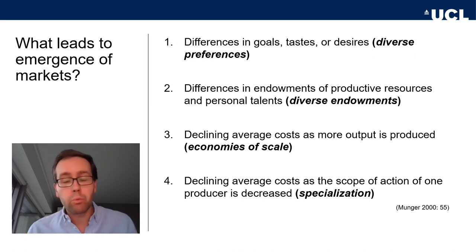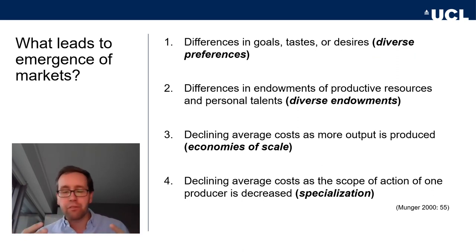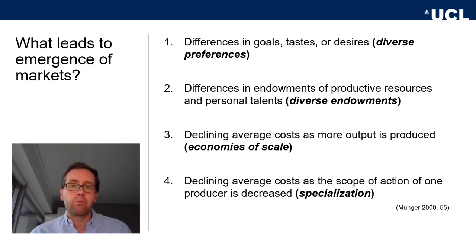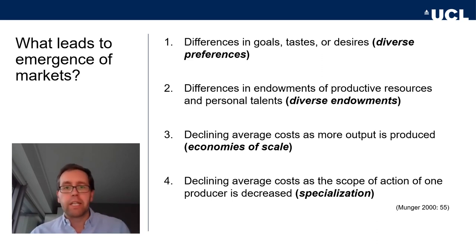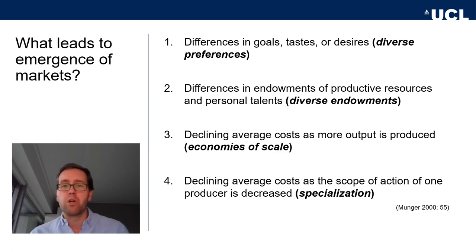The sweets experiment is a really nice example of diverse preferences — people like different things. If they have different endowments and like different things, there's an opportunity for trade and for the emergence of a market. Think about old clothing you don't really like anymore that is still in good shape — you could sell it, and there might be someone on eBay who would really like that weird sweater with the wolves on it from ten years ago. Diverse preferences lead to the emergence of markets.